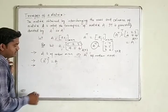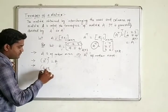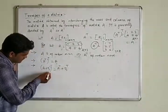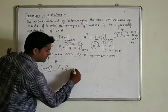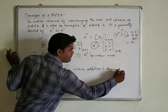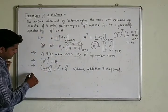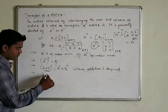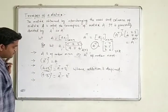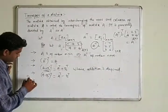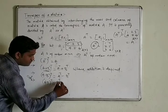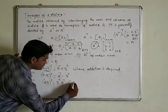The next property is: the transpose of (A + B) equals A^T plus B^T, where addition is defined. Similarly, the transpose of (A − B) equals A^T minus B^T. One important property is the reversal law: (AB)^T equals B^T times A^T, where the product AB is defined.